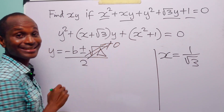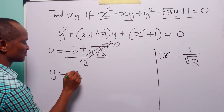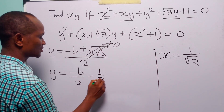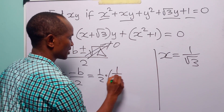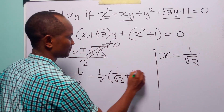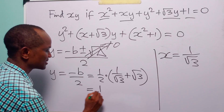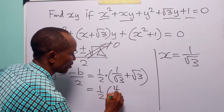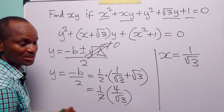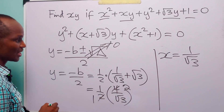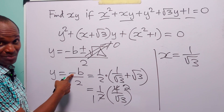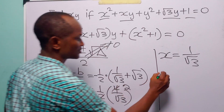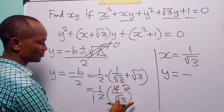Since the discriminant equals 0, we have y equals minus b over 2a. Substituting b equals x plus root 3, with x equal to 1 over root 3, we get y equals negative one half times 1 over root 3 plus root 3. That is negative one half times 4 over root 3, which gives y equals minus 2 over root 3.